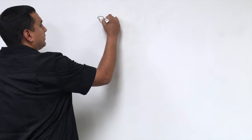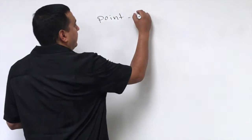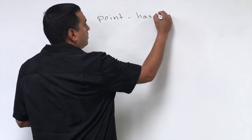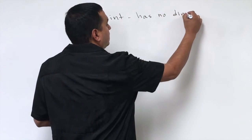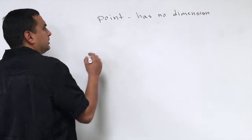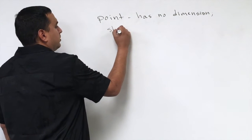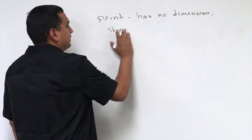The first one is a point. Now a point has no dimension. That's an important thing to remember. What it does show, it shows us location. It tells us where something is at.